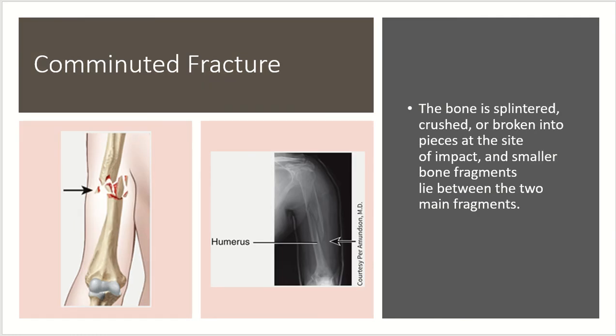Next we have a comminuted fracture, when the bone is splintered, crushed, or broken into little pieces at the site of impact, and those smaller bone fragments lie between the two main fragments of the bone. This is a serious one, and it involves a lot of pins, screws, and metal plating to put back together.